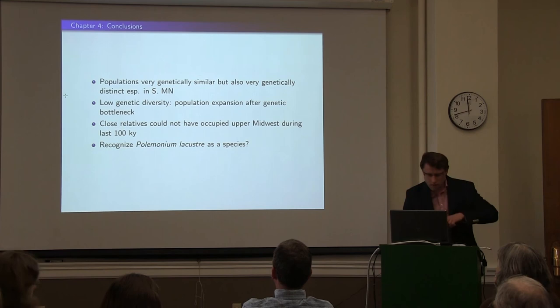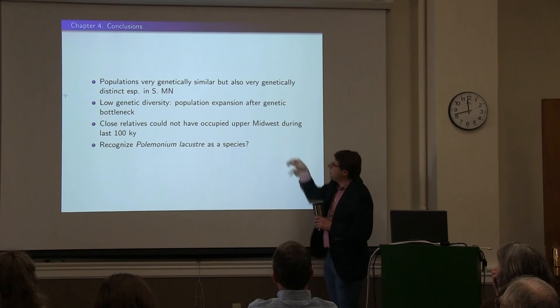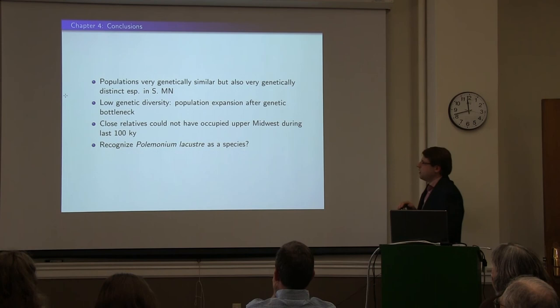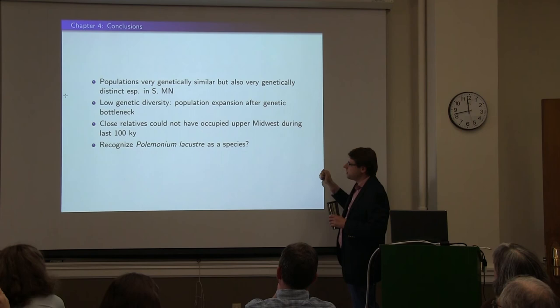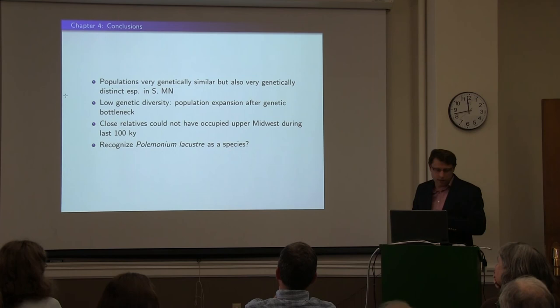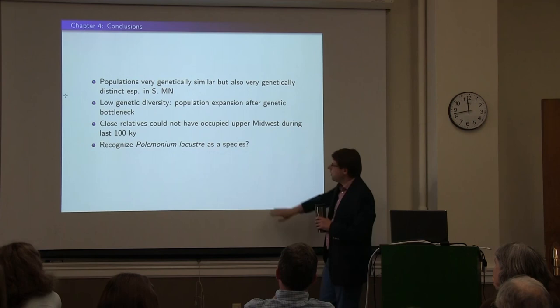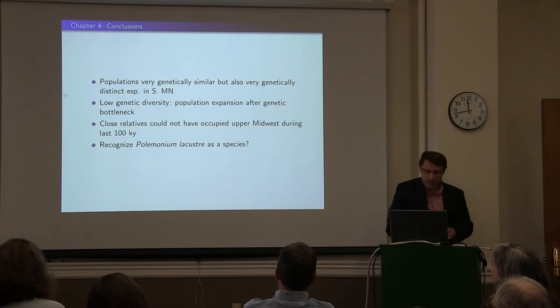In conclusion: all populations of lacustre are very genetically similar, but they are also genetically distinct, especially in southern Minnesota. There is low genetic diversity and some evidence for population expansion after a genetic bottleneck. The closest relatives of lacustre couldn't have occupied the upper midwest during the last 100,000 years. In fact, from chapter three, the divergence between Polemonium occidentale and Polemonium lacustre is about two and a half million years ago. So it's possible that lacustre could be a Pleistocene relic from a now-extinct western species, but it's unclear at this point. Perhaps — I'm not going to make a decision right here — on whether Polemonium lacustre should be an endemic species to the upper midwest, but that's a possibility based on the data.